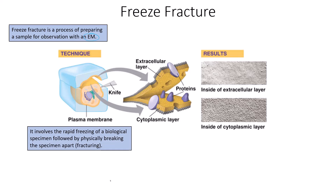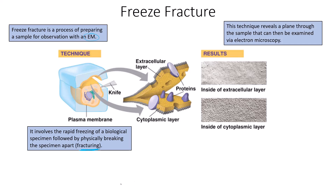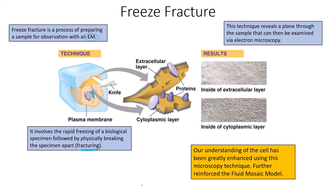Freeze fracture involves the rapid freezing of a biological specimen — in this case a section of the membrane — and then physically breaking it. That breaking is called fracturing, which is why it's called freeze fracture. We freeze the specimen, fracture it along planes we want to look at, split it open between the two layers of phospholipids, and then examine those samples via electron microscopy. This technique has increased our understanding of the cell and diversified the techniques we can use in tandem with microscopy.